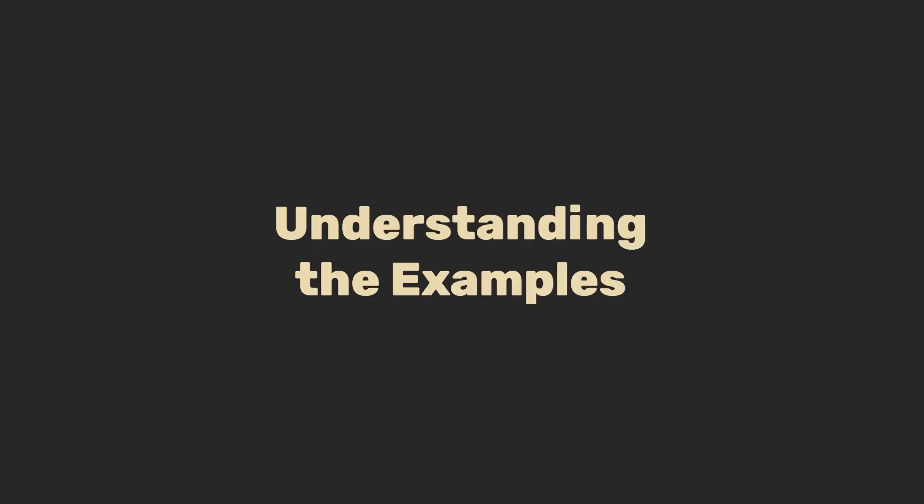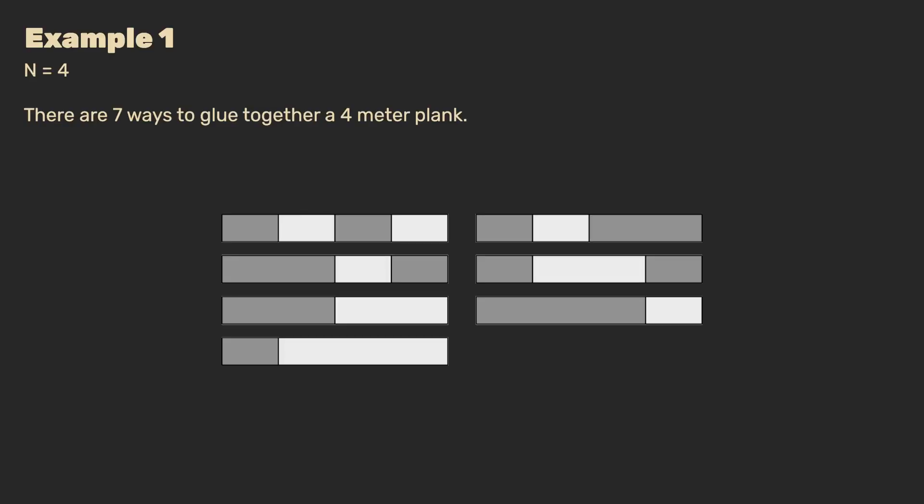Before we move towards solving the problem, let's have a look at the example. Here, we are requested to construct a plank of 4 meters long, and there are 7 unique ways to do so. For example, on the top left, we see the plank built up from 4 pieces of 1 meter. Just below that, we see a combination of 2 meters and 2 times 1 meter. When the requested length is so small, we could even do this exercise by hand and find that indeed there are only 7 ways to make the plank.